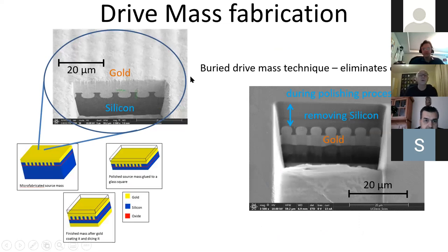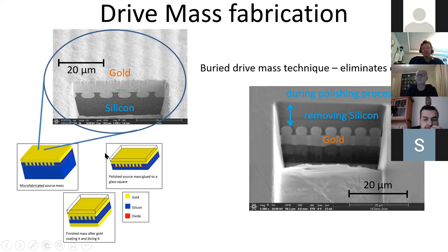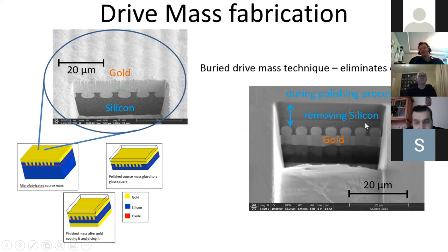The source mass is fabricated here by etching trenches into a silicon wafer using standard microfabrication techniques and then electroplating gold into those trenches. This produces a corrugated surface, which is not ideal because we don't want modulation in patch potentials or electromagnetic backgrounds at the same period as the density modulation. So after creating the wafer, we flip it upside down, mount it on a substrate, and polish away the silicon from the back side, leaving a flat silicon surface about one to two microns thick right above the gold teeth — so we don't modulate the electromagnetic background while modulating the gravitational background.